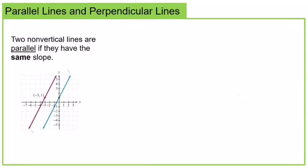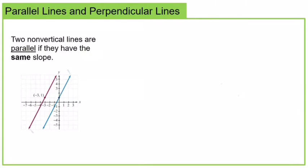The last thing we need to do in this section is talk about parallel and perpendicular lines. Our goal is to write the equation of a line that's parallel to another line or perpendicular to another line, so we need to know how the slopes of parallel and perpendicular lines relate. Two non-vertical lines are parallel if they have the same slope — parallel means they're never going to cross, so they can only be parallel if they have the same slope.